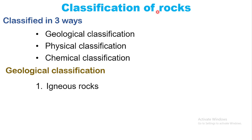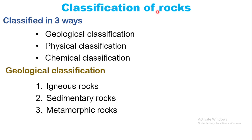In Geological Classification, rock is divided into three types. The first one is Igneous Rock, the second one is Sedimentary Rock, and the third one is Metamorphic Rock. We are going to study each of these in detail in this video.